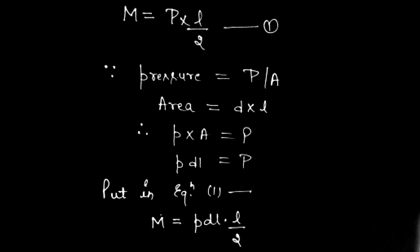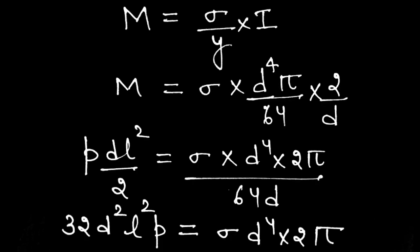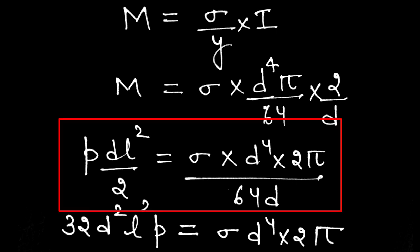We substitute the value of P into the bending moment equation. We found M = P × L/2, and P = pressure × D × L, so M = pressure × D × L × L/2. Now substituting all values into the bending relation M = (σ/Y) × I.